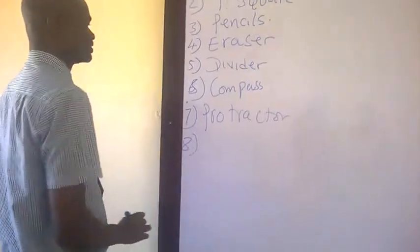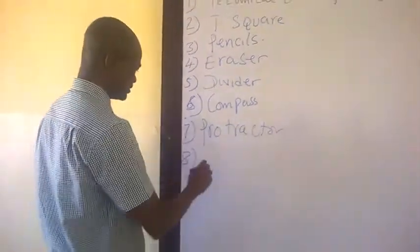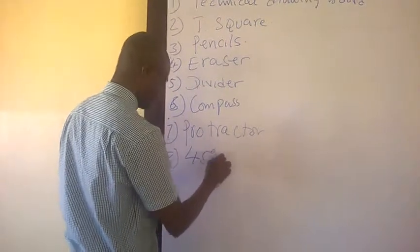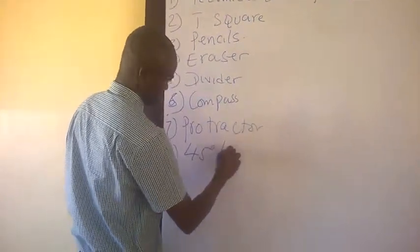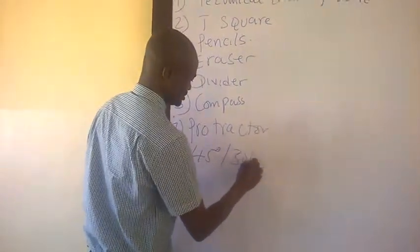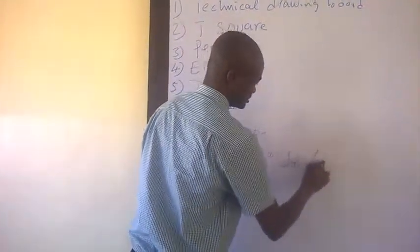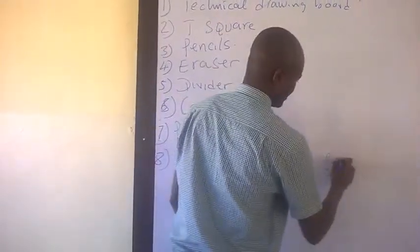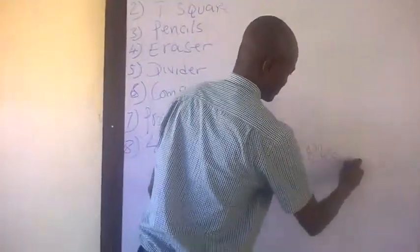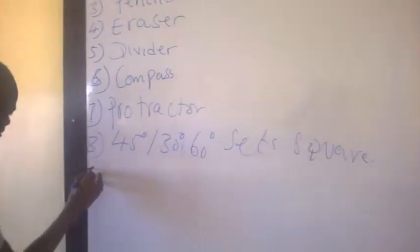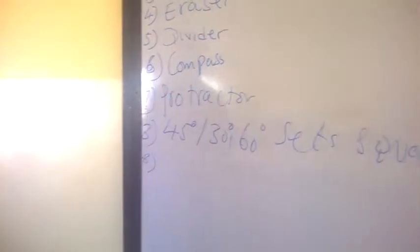The eighth is the 45 and 30, 60 degrees set square.